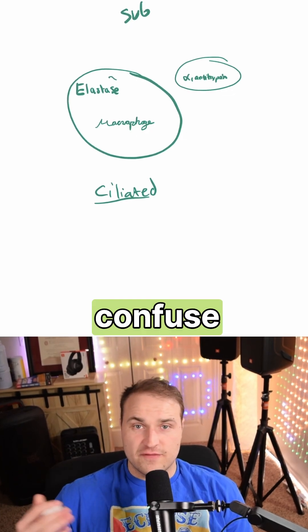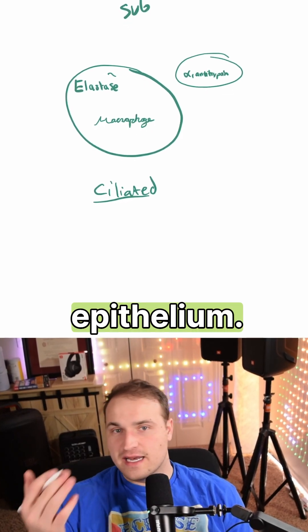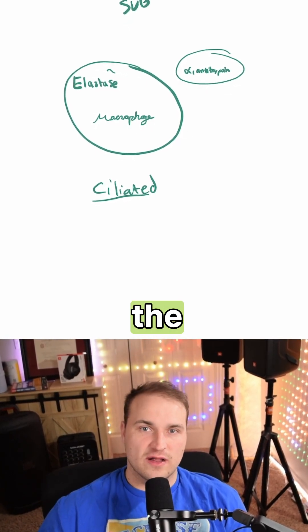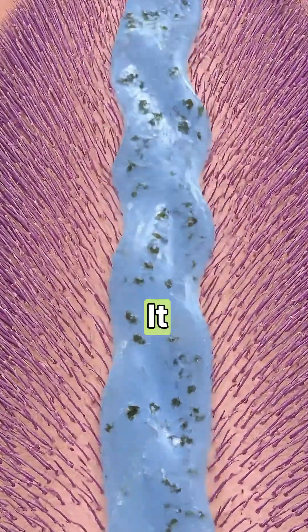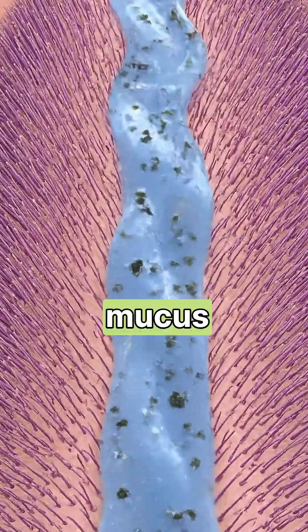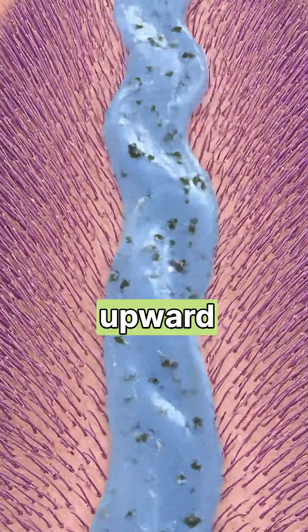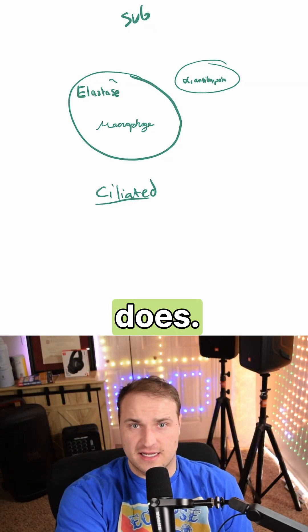They're going to try to confuse you with ciliated epithelium. The function of that is just mucociliary clearance — it moves mucus and particles upward. That's all it does.